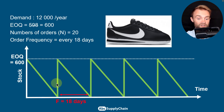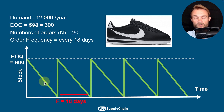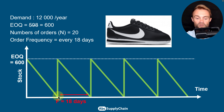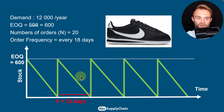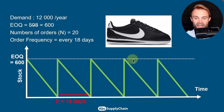With an EOQ of 600, when you consume all your stock you order another 600 units. You also need to consider lead time to make sure you don't run out of stock before receiving the new order — I'll cover that in my next video on safety stock.